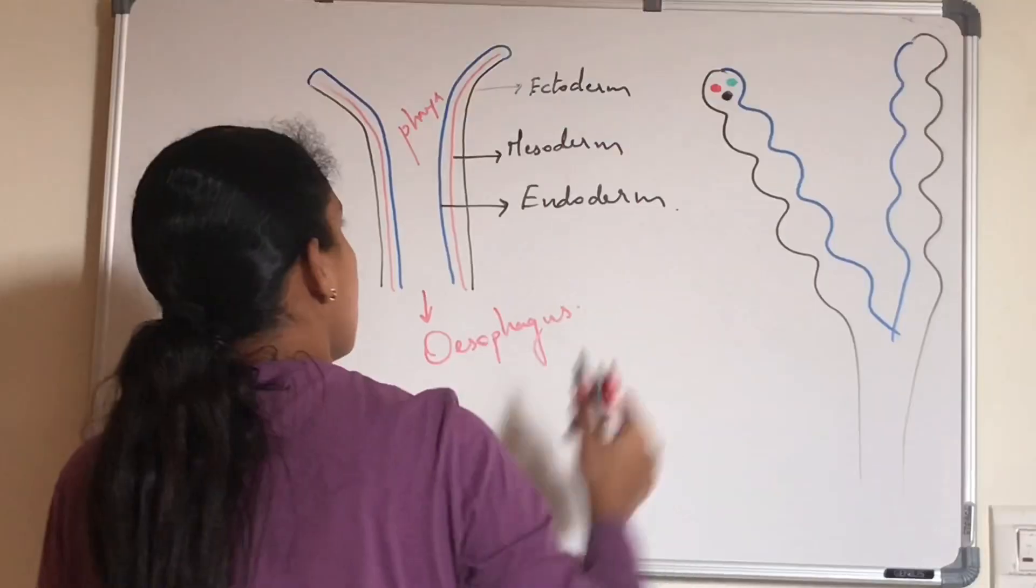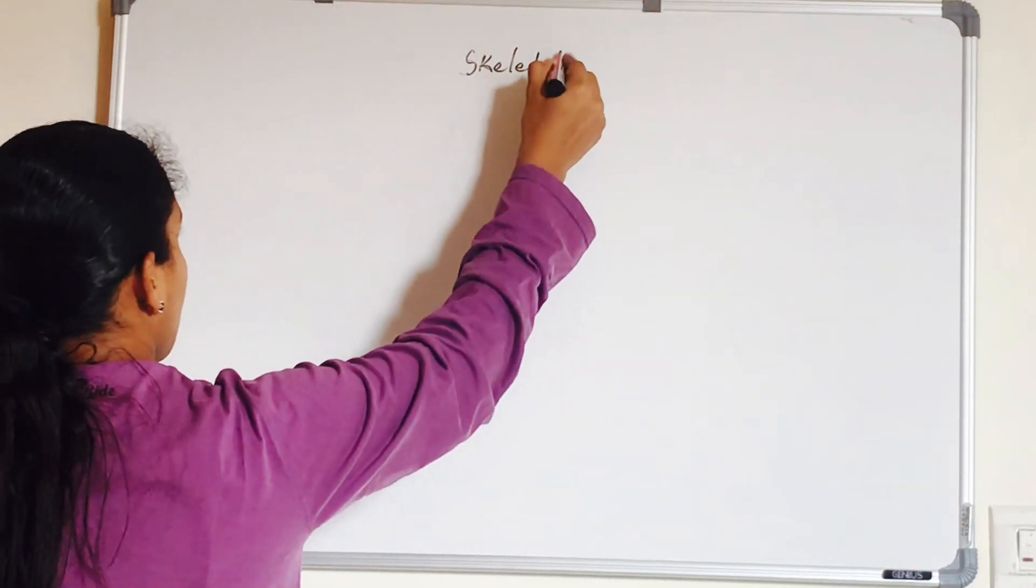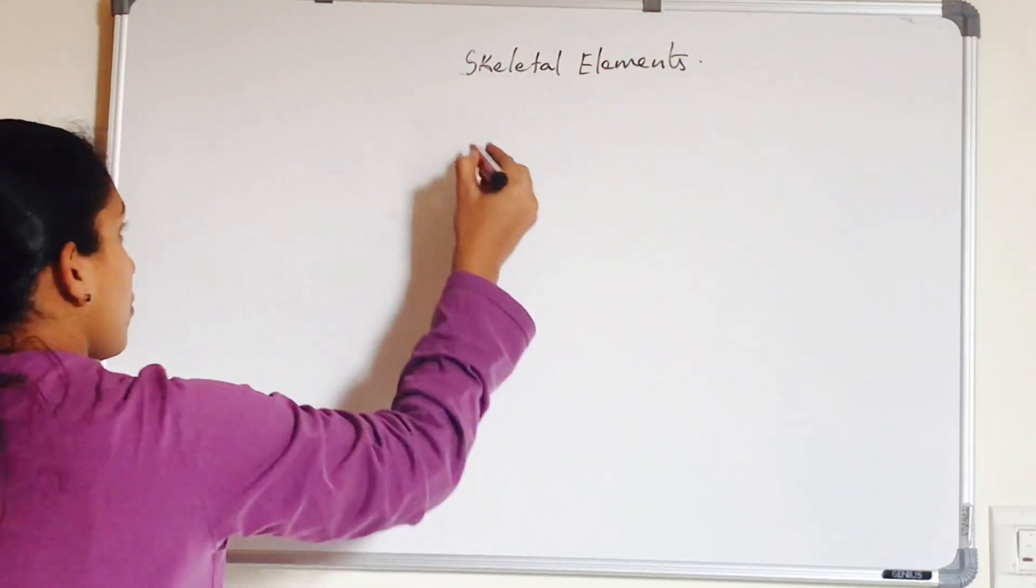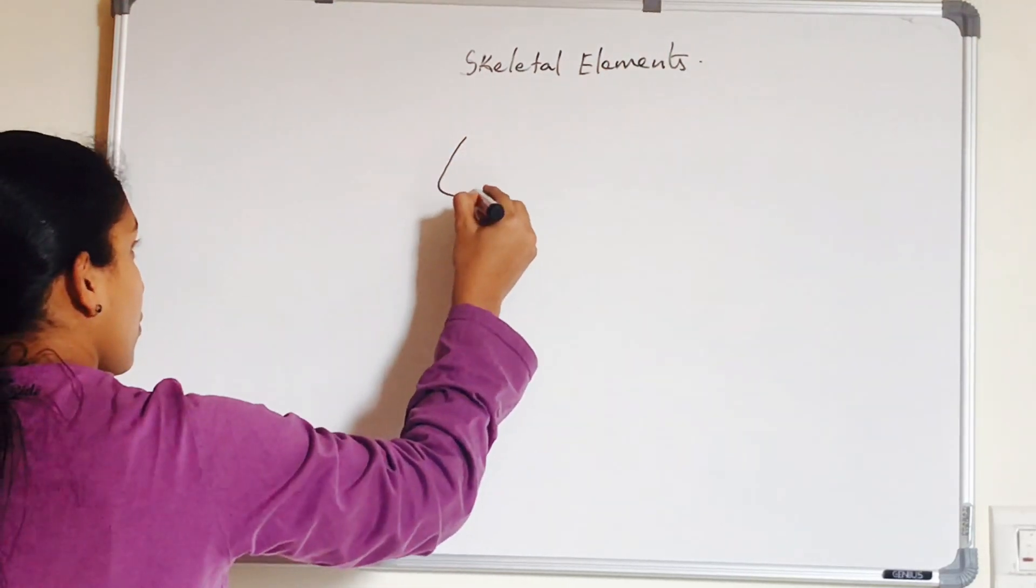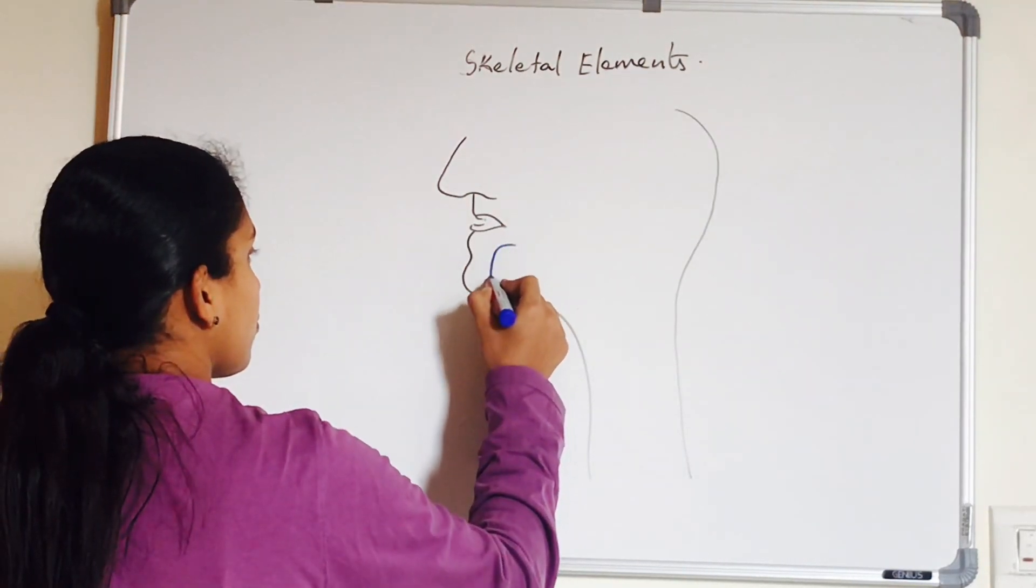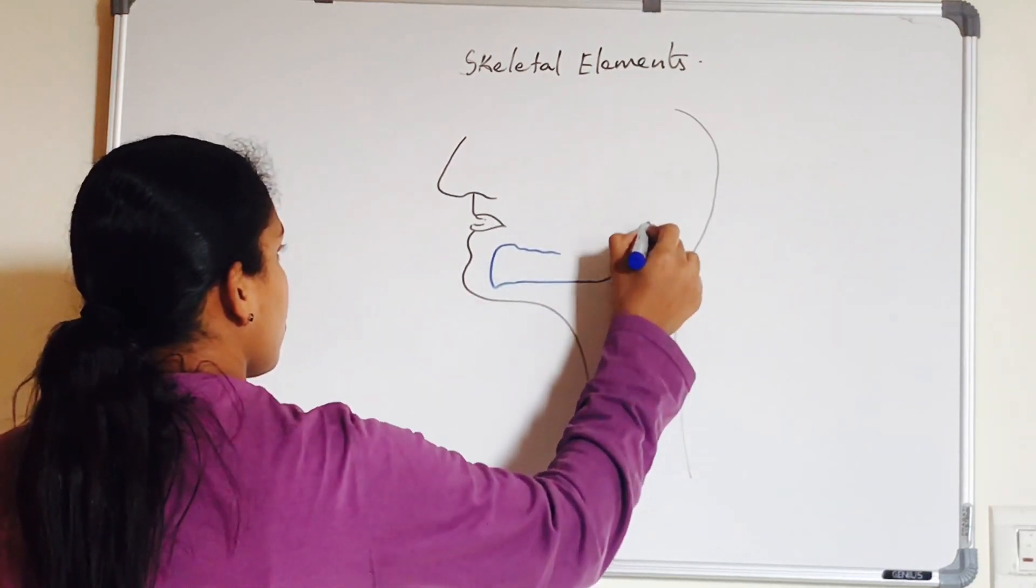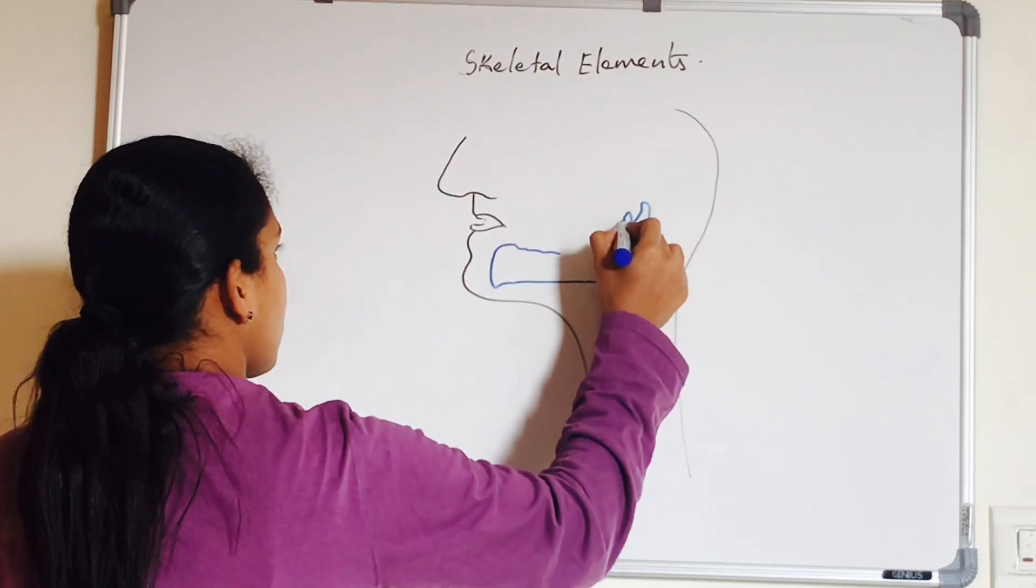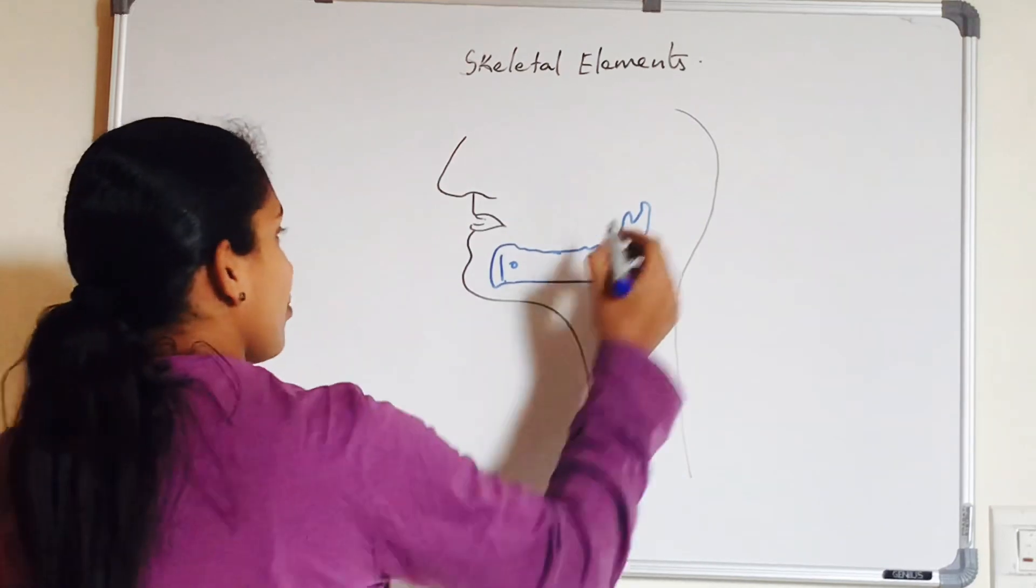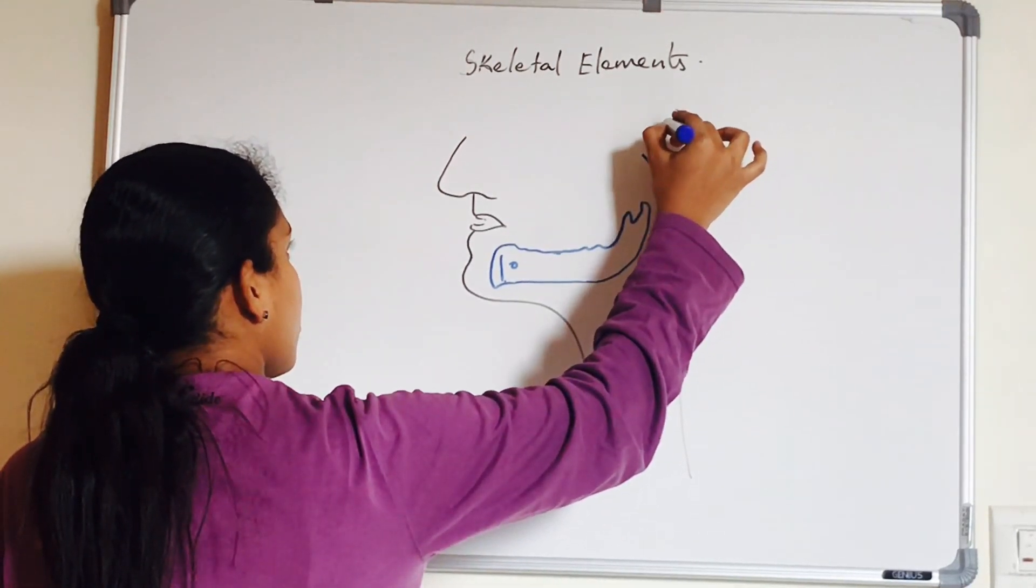Let's talk about the skeletal elements. Just remember the skeletal elements of branchial arches are derived from the neural crest cells of midbrain and hindbrain. Now moving on to the first arch, that is mandibular arch. The cartilaginous bar of the mandibular part extends dorsally up to the cartilaginous ear capsule. So the dorsal part of the cartilage is ossified to form two ear ossicles: malleus and incus.